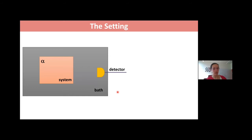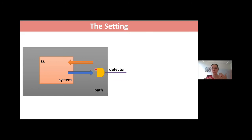The setting is this: a system parameterized by some parameter alpha, which will be atoms, embedded in a bath — the radiation field. We can have a detector. For example, atoms emitting photons, as in Elena's talk — you can detect those photons and analyze the light that comes out. This happens because there is an interaction between the environment and the system, and you can write an equation describing the system's dynamics.